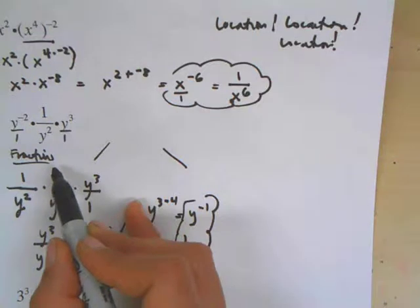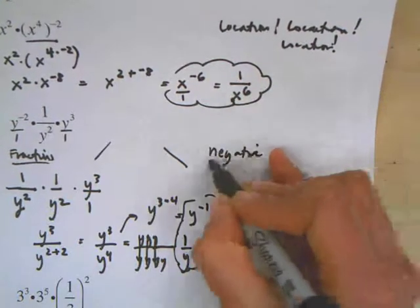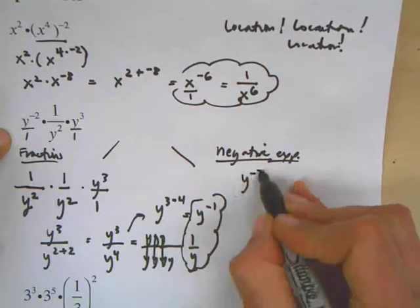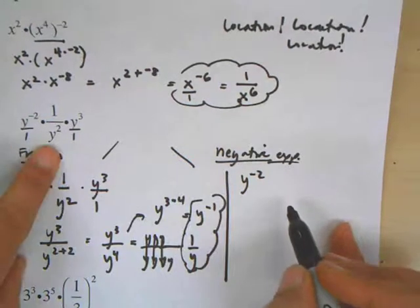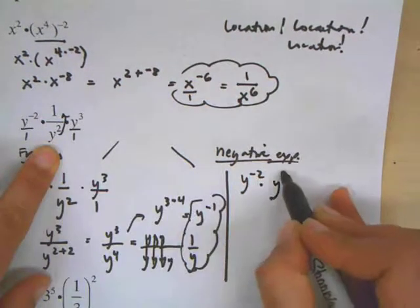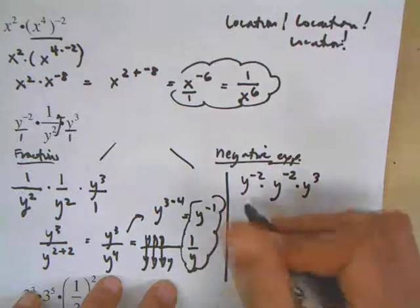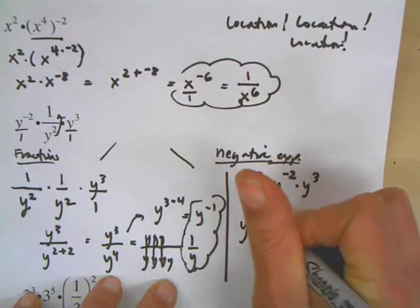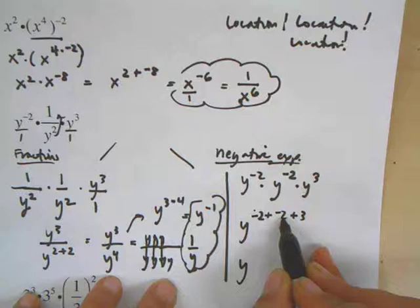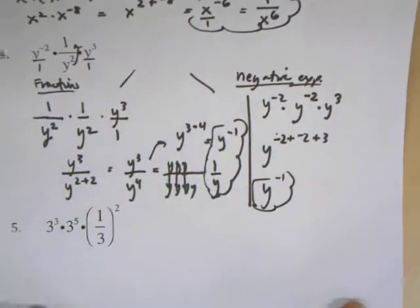Now the second method: instead of rewriting everything as fractions, I'll just deal with negative exponents and want no fractions. So I'm going to rewrite this problem. Y to the negative second is fine. For the 1 over y squared, I don't want any fractions, so I'll rewrite it with a negative exponent by changing the location to the top — which also changes the sign of the exponent. The other term, y to the third, is already in the numerator. Then when I multiply exponents with the same base, I add the exponents: y to the negative second, plus negative 2, plus 3. I get the same answer, which one would hope, since it's the same problem.